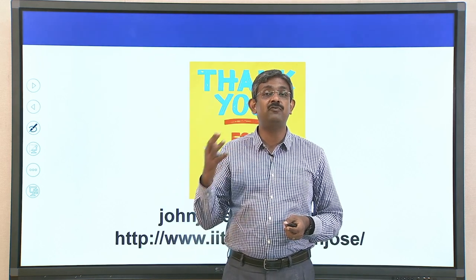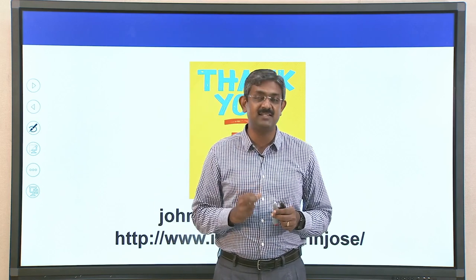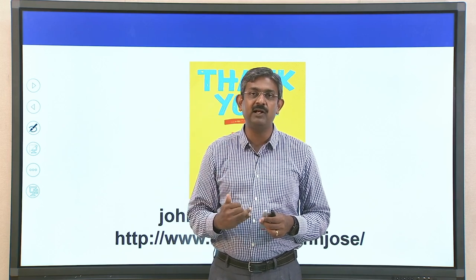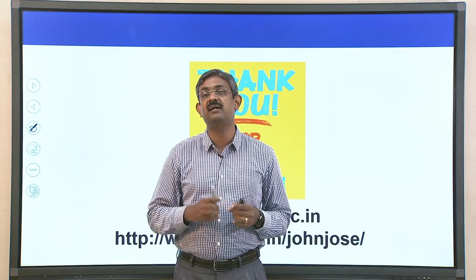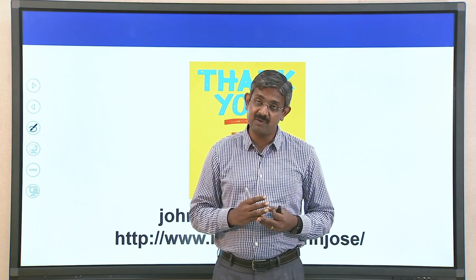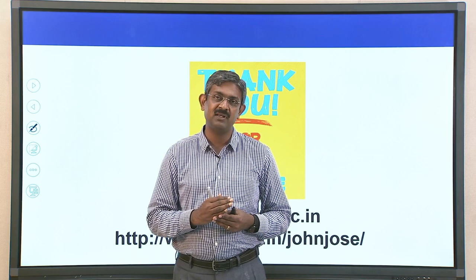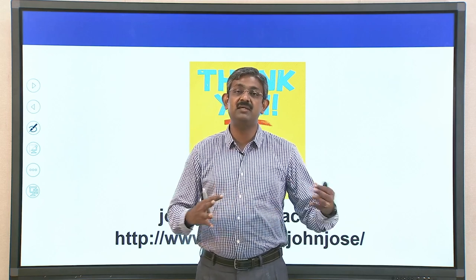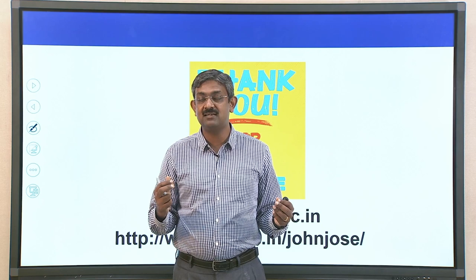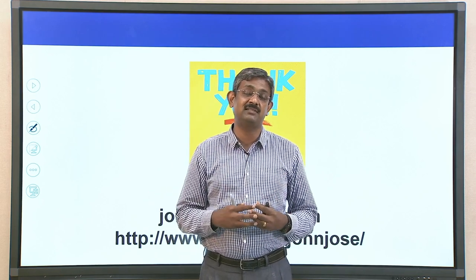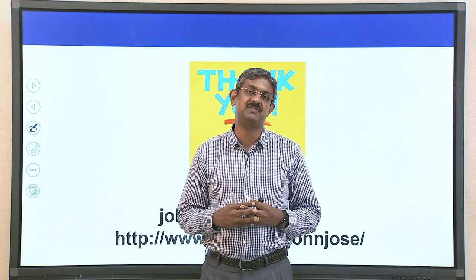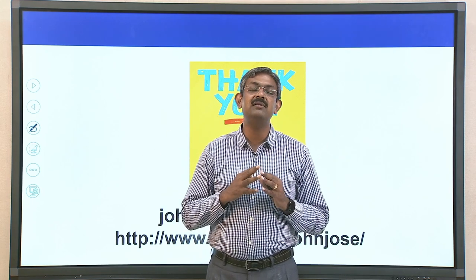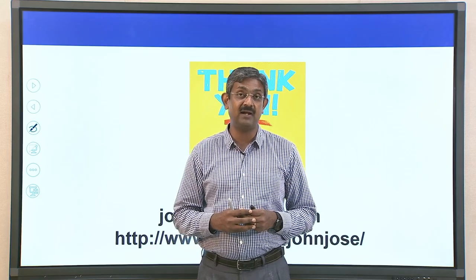We are coming to the end of this lecture. A quick summary: we started with what an instruction is, the difference between instruction set architecture and micro-architecture, the four classifications of ISA — stack machine, accumulator machine, register-memory architecture, and register-register or load-store architecture. We then learned about different types of addressing modes with examples and illustrations. With this we have a fair idea of what an instruction is, how instruction set architecture helps get tasks done, and how addressing modes help. Happy learning. Thank you.